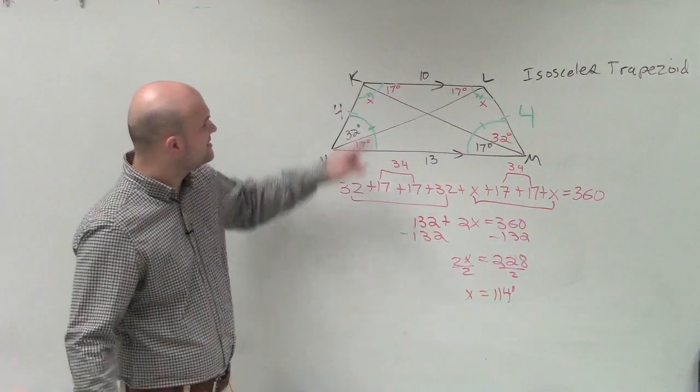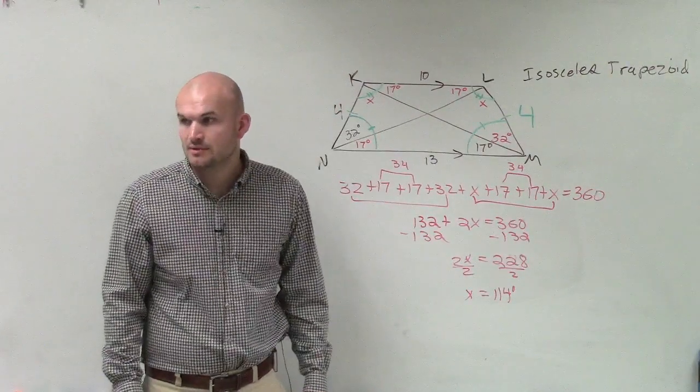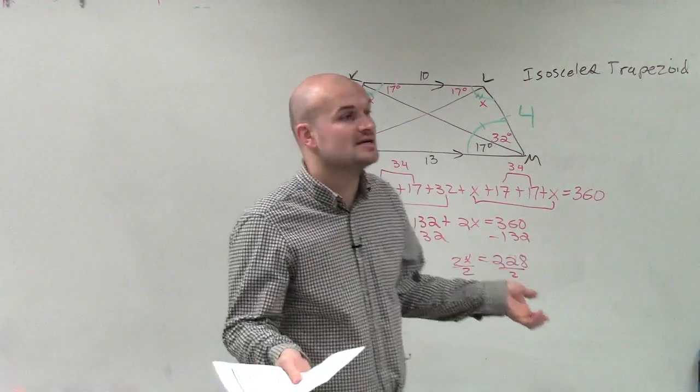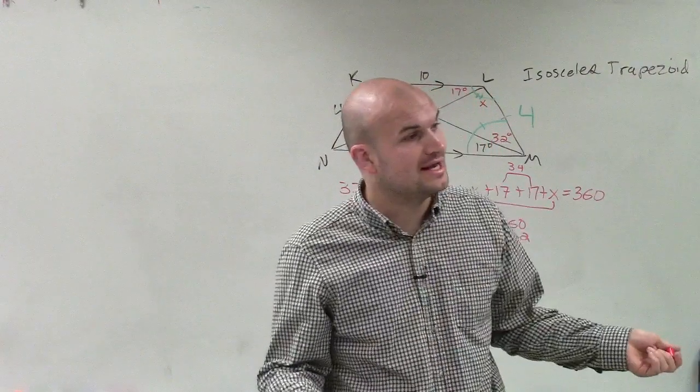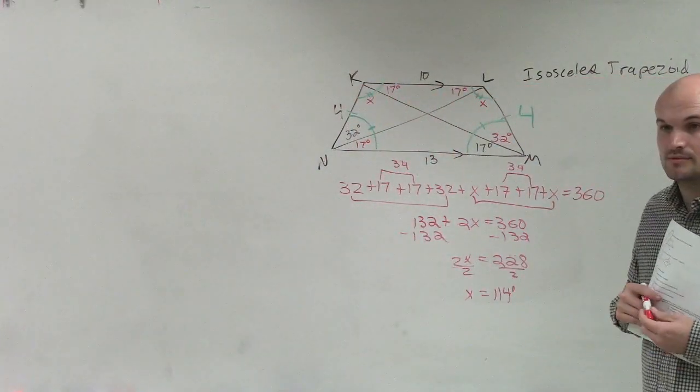Therefore, you can see that these angles right here for x is going to be 114 degrees. OK, because we know parallelograms, consecutive angles, add up to 180. But that doesn't have to be the case with our trapezoid. OK?